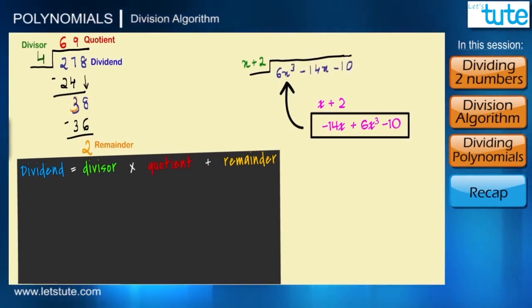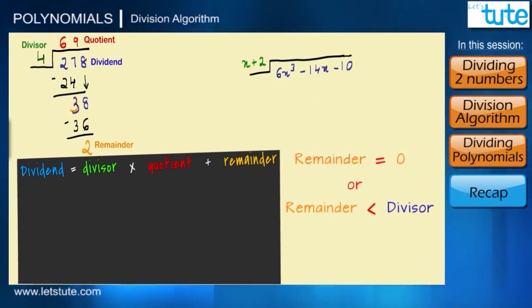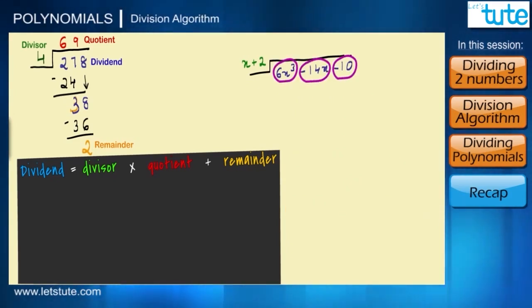Now our goal here is to get the remainder equal to 0 or to get the remainder lesser than the divisor. So what do we do? We will try and cancel out each of the terms of the dividend. Let's begin with the first term 6x³ and the first term in the divisor is x.